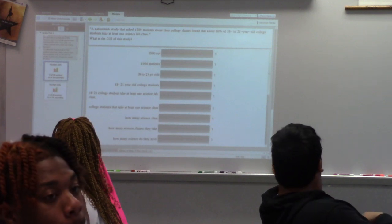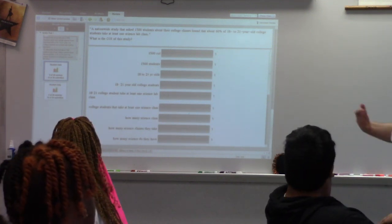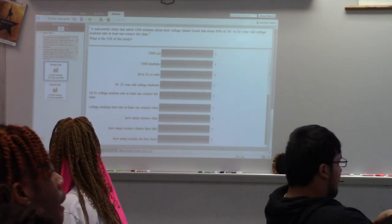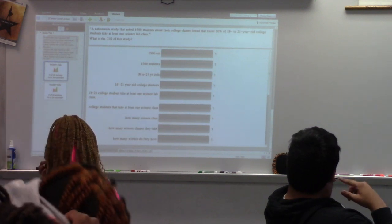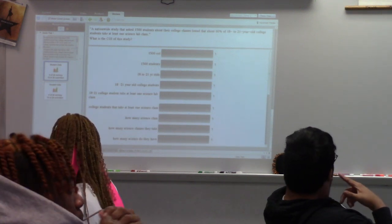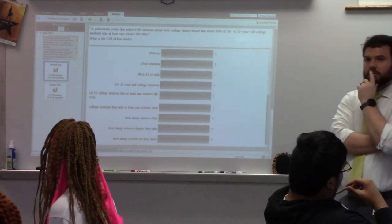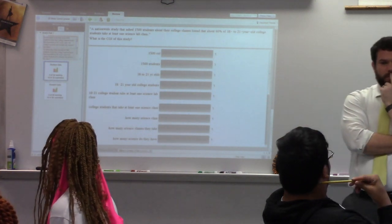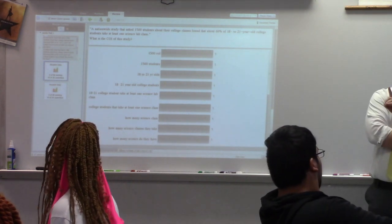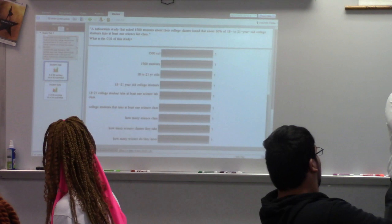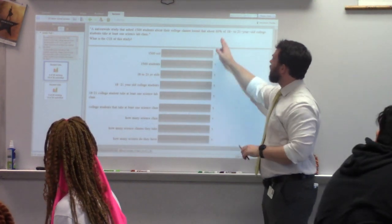Characteristic of interest. Nationwide study that asked. So, what is the characteristic of interest? What key things should we think about for characteristic of interest? What do you want to know? What did we want to know about for those 18 to 21-year-old college students? How many of them took at least one science class? One thing I will point out is, it's very similar. I wouldn't count this against you. It's not actually how many took one science class. It's actually a... What percent?